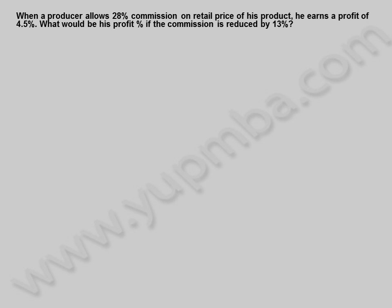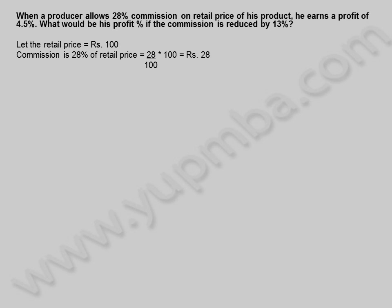Another example: when a producer allows 28% commission on the retail price of his product, he earns a profit of 4.5%. What would be his profit percentage if the commission is reduced by 13%? Let the retail price equal 100 rupees. Commission = 28% of 100 = 28 rupees. Selling price = 100 − 28 = 72 rupees.